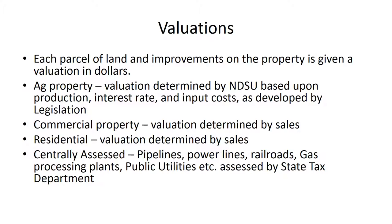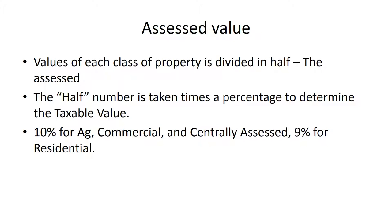Pipelines, power lines, railroads, gas processing plants, public utilities — those values are all put on by the state tax department, and the counties have very little, if anything, to do with that. So the assessed value is half of what the value is — that's called the true and full value. For example, NDSU Extension says my quarter section of land based upon a price per acre is worth $50,000. We divide that in half — that becomes the assessed value. We take it times 10% — that becomes the taxable value.